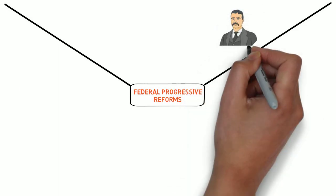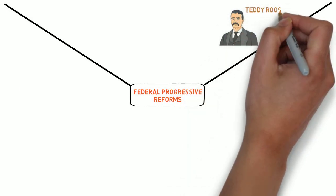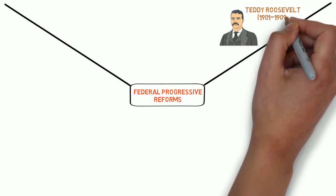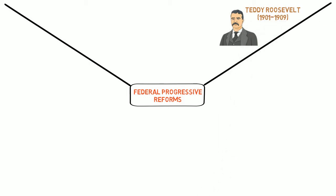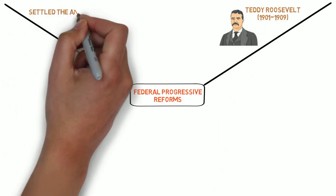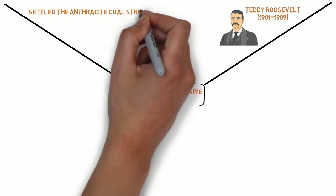President Theodore Roosevelt set the standard for progressive presidents. Early in his presidency, Roosevelt demonstrated he would be a progressive president when he intervened in the anthracite coal strike in 1902. Unlike earlier presidents, Roosevelt helped the striking workers get better conditions.